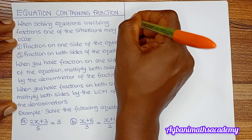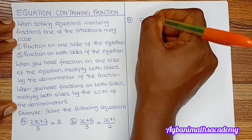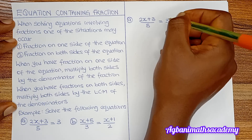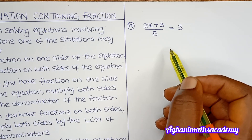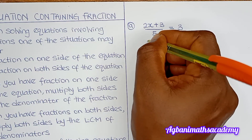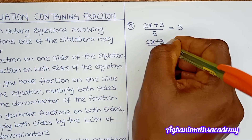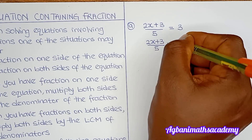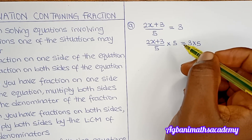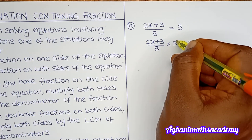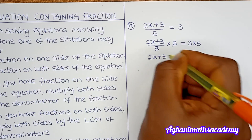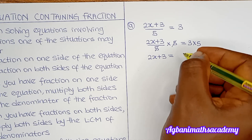For question A, we have (2x + 3) / 5 = 3. Since there is a fraction on one side, we multiply both sides by the denominator 5. This gives us (2x + 3) / 5 × 5 = 3 × 5. The 5s cancel on the left, leaving 2x + 3 = 15.